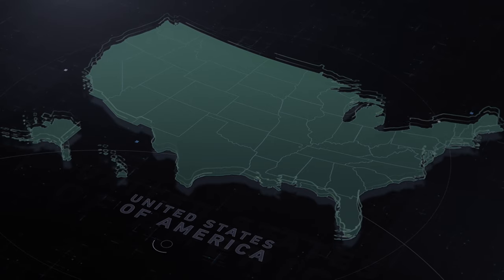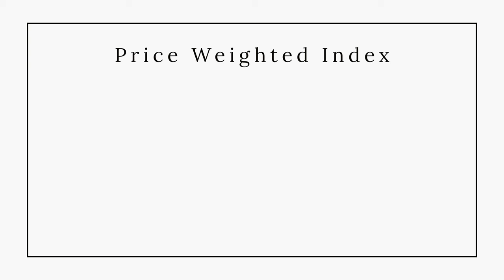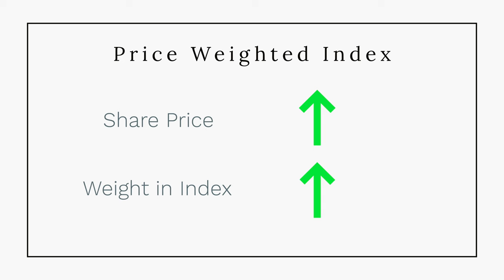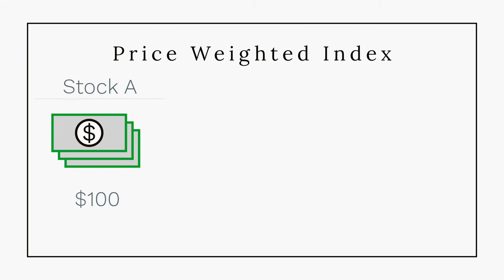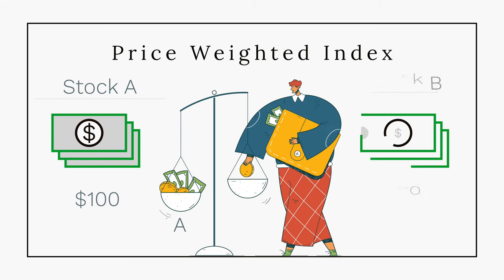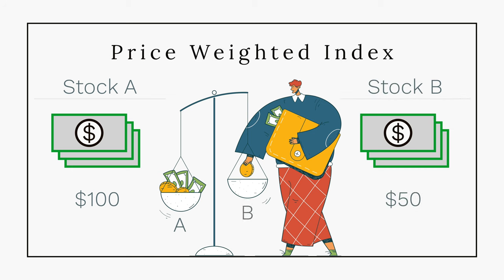The second type is a price weighted index. As discussed, the Dow Jones is a price weighted index, which is not commonly seen — a higher-priced stock carries a higher weight. So a $100 stock would carry much more influence than a $50 stock. Indexes using this calculation need to adjust for factors such as stock splits or dividends. The share price alone does not reflect the actual size of the companies, which is why a price weighted index is not as common.